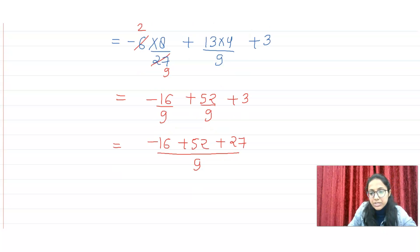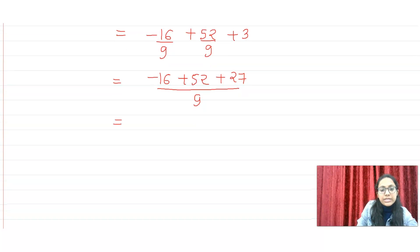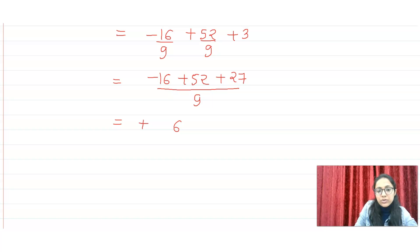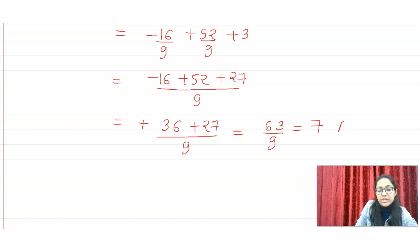We have done the simplification with denominator 9. Now solving the numerator: minus 16 plus 52 is 36, plus 27 gives 63. So we get 63 by 9, which equals 7. And this will be our answer.